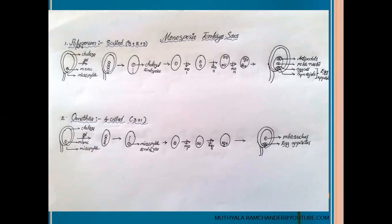The micropylar end megaspore participates in the first mitotic division to form two nuclei, and the second mitotic division to form four nuclei. The four nuclei are converted into four cells present at the micropylar region. From these four cells, one cell moves to the center region of the embryosac and acts as a polar nucleus, while the remaining three cells remain at the micropylar region and are called the egg apparatus.